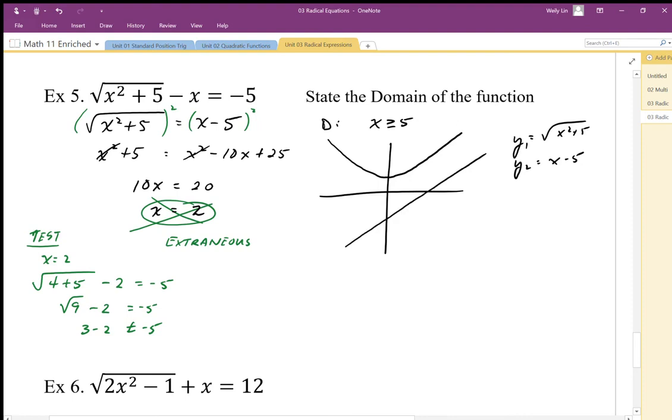It looks like since this is kind of curving towards that, these end up being kind of parallel lines, so there's no solution, there's no intersection.